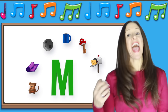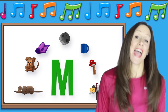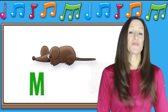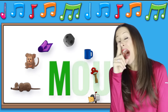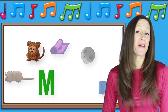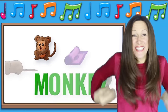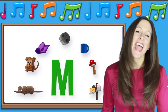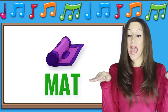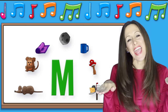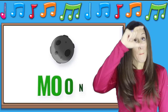The letter M. M is for m-m-mouse, m-m-mouse, m-m-mouse. M is for m-m-monkey, m-m-monkey. M is for m-m-matt, m-m-matt, m-m-matt. M is for m-m-moon, m-m-moon.